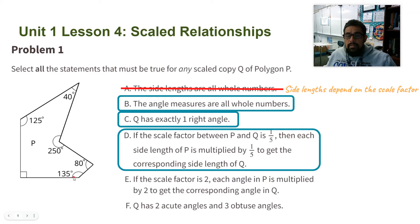Part E: If the scale factor is 2, each angle in P is multiplied by 2 to get the corresponding angle in Q. Remember, corresponding angles in scaled copies stay the same, so you do not multiply the angles by two. Angles stay the same in the scaled copy, so this one is not true.